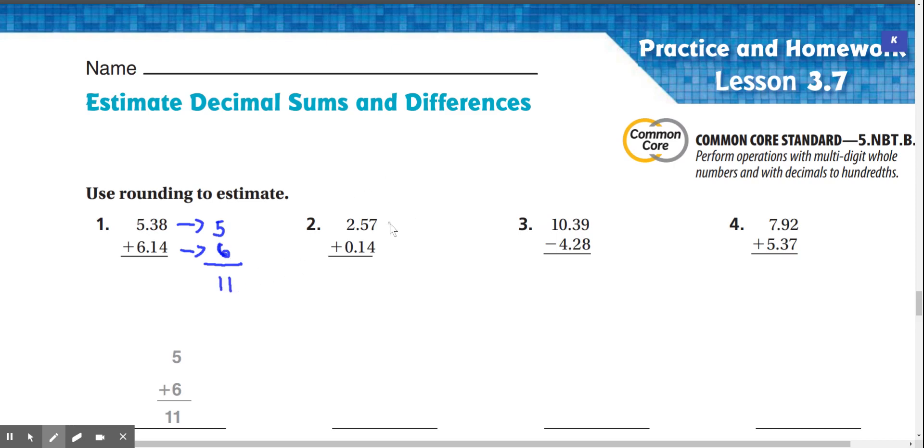Number two, 2.57 is going to round to 3. 0.14 is going to round to 0. 3 plus 0 is just 3.